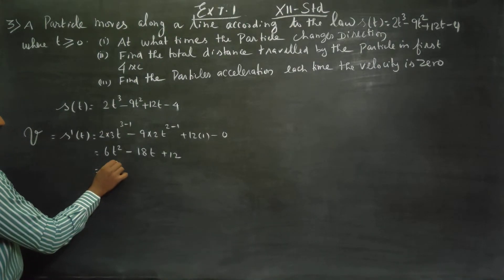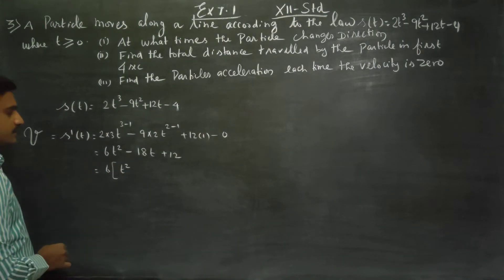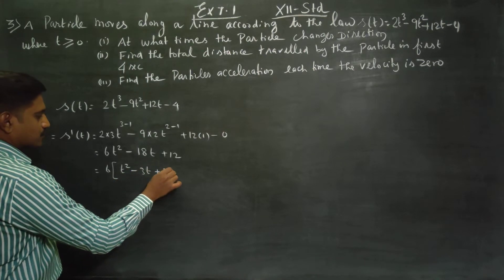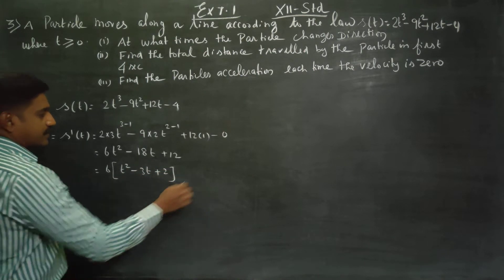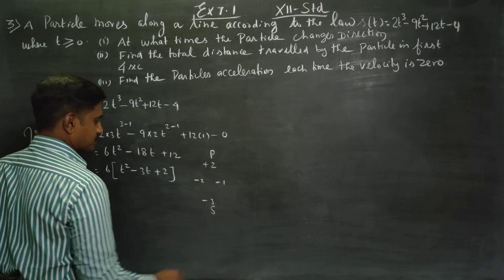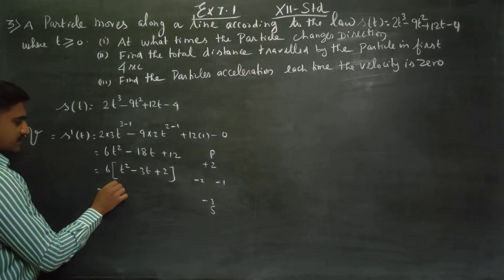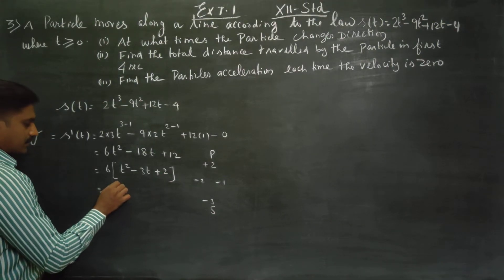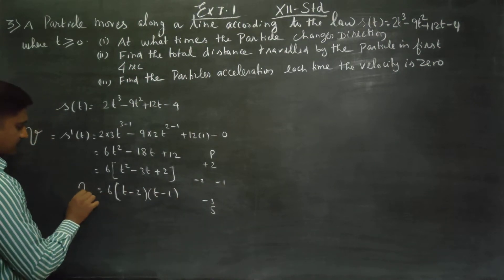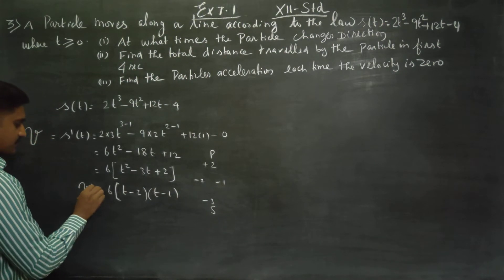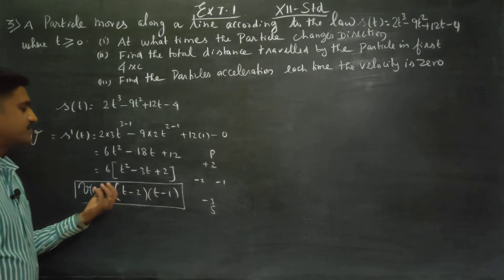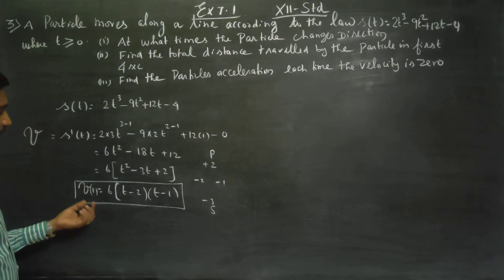Taking out the factor 6, you get t squared minus 3t plus 2. Factoring further, the product is plus 2 and sum is minus 3, giving minus 2 and minus 1. So your answer will be 6 into (t minus 2)(t minus 1). This is my velocity.